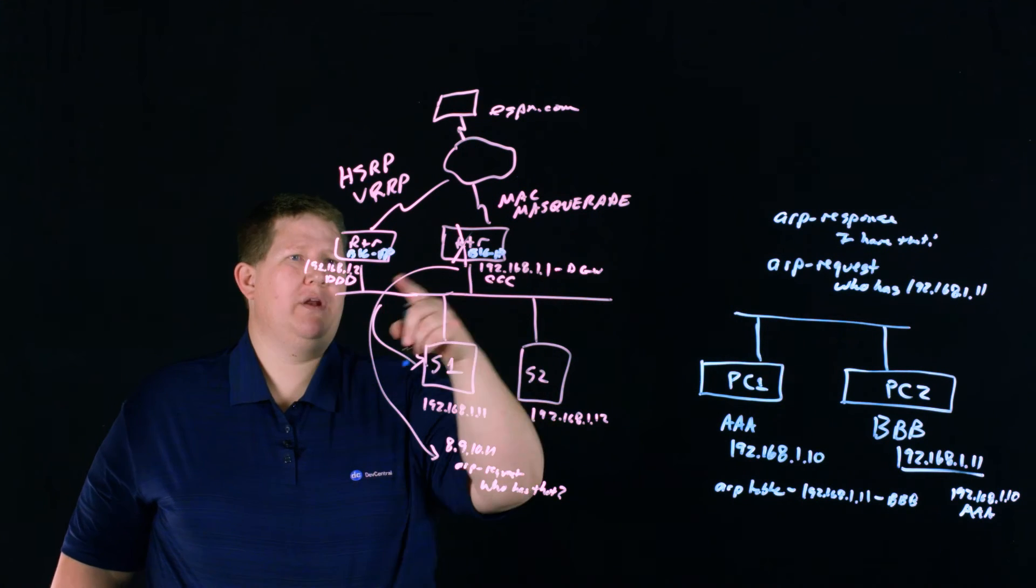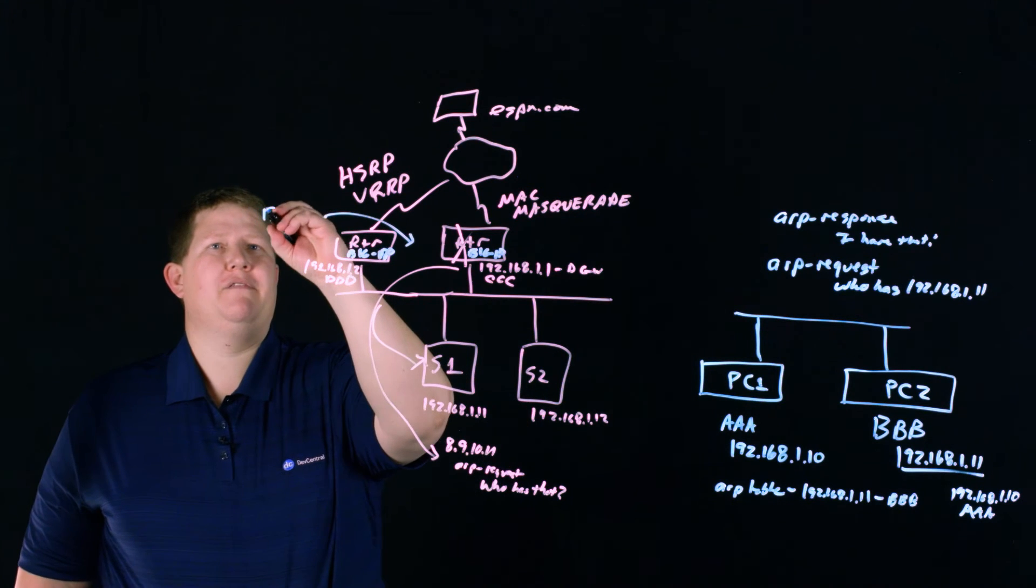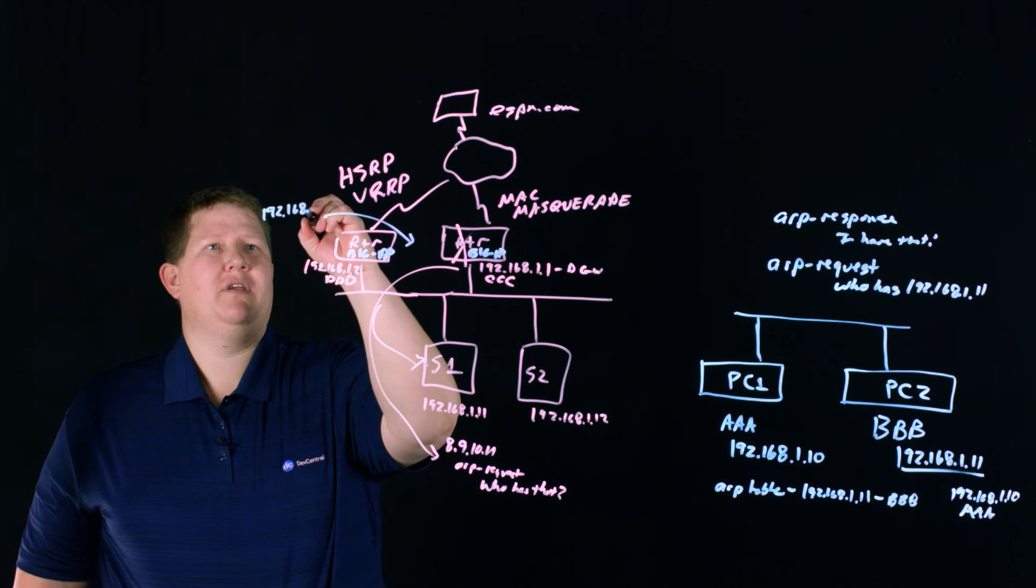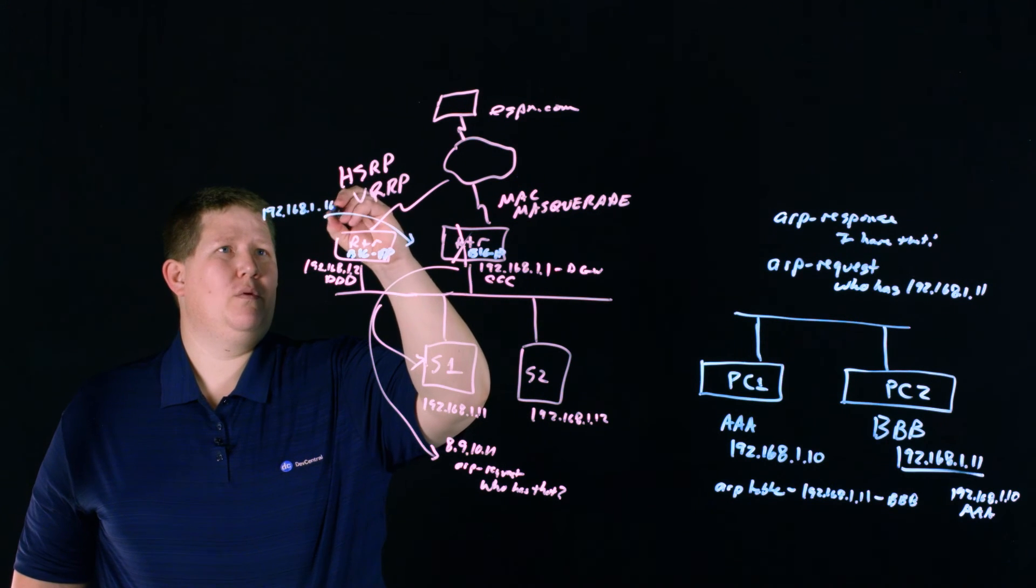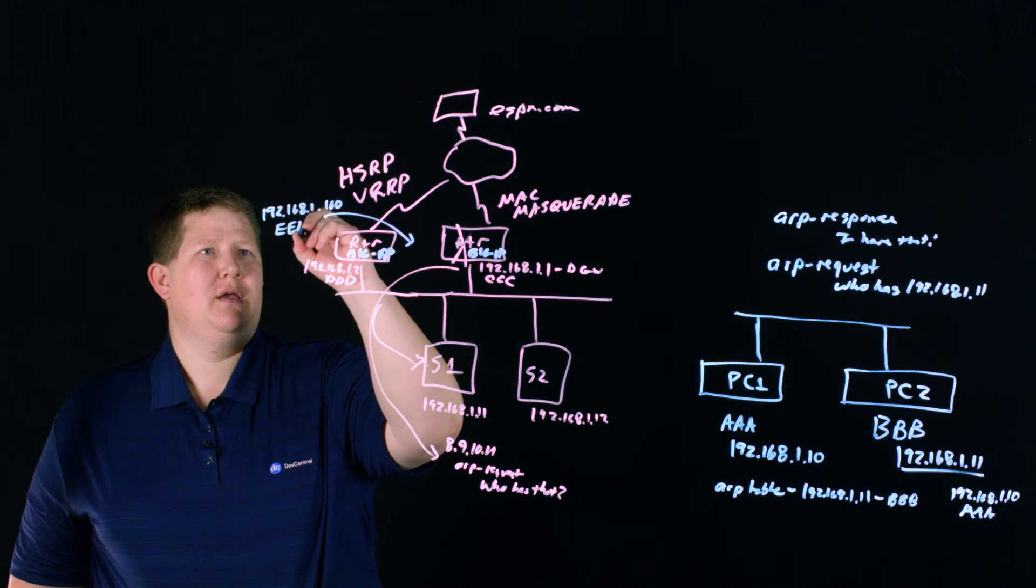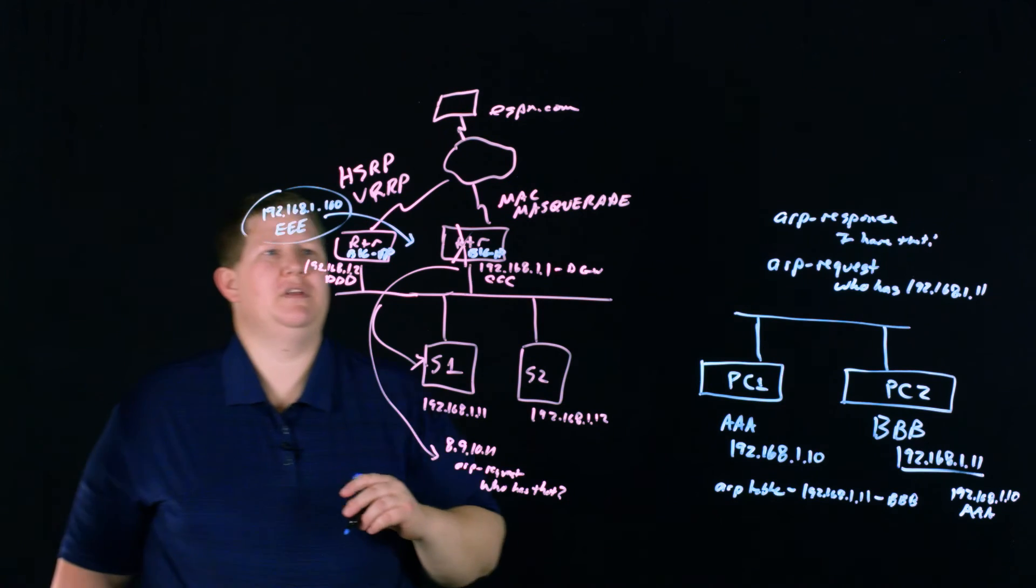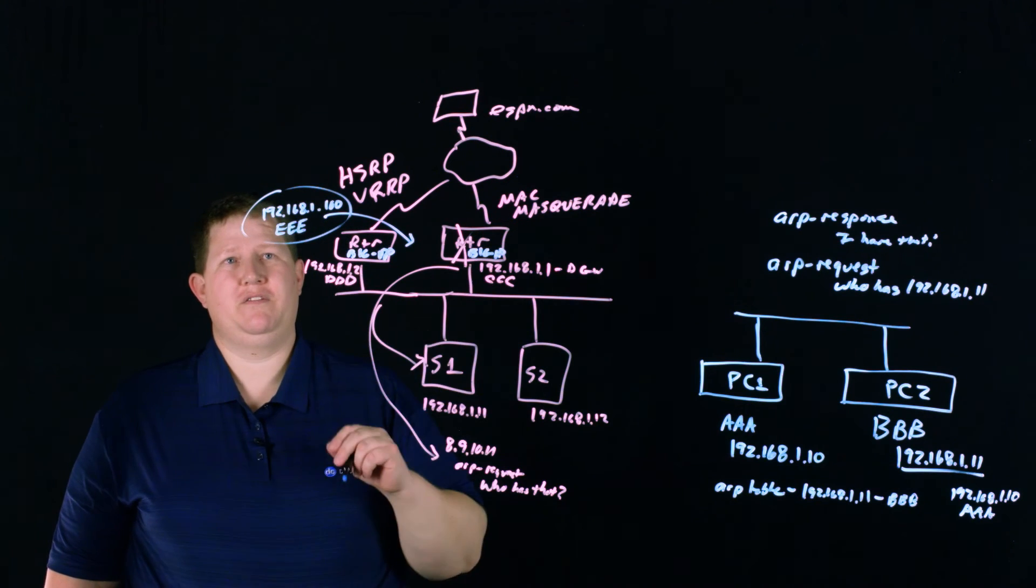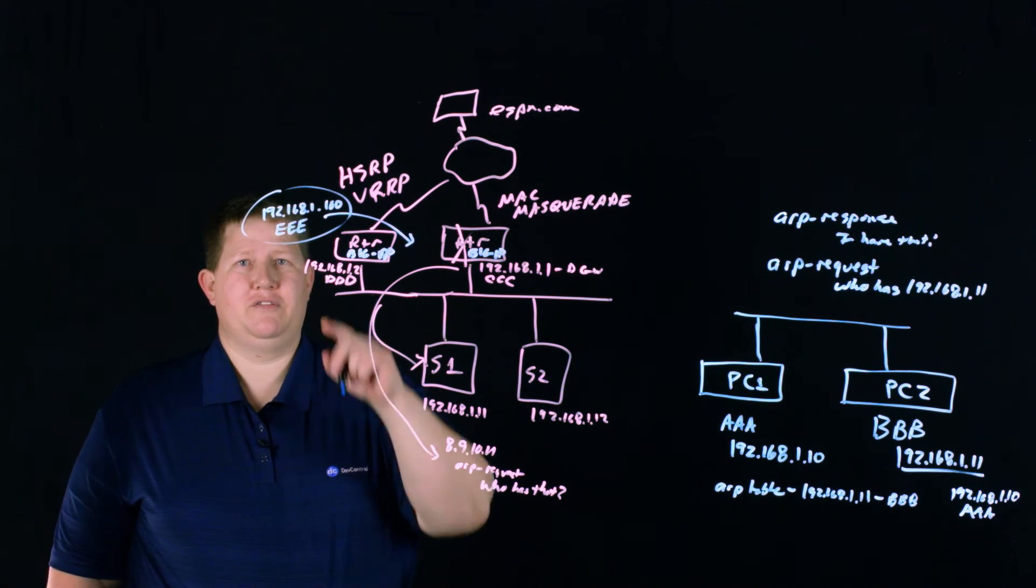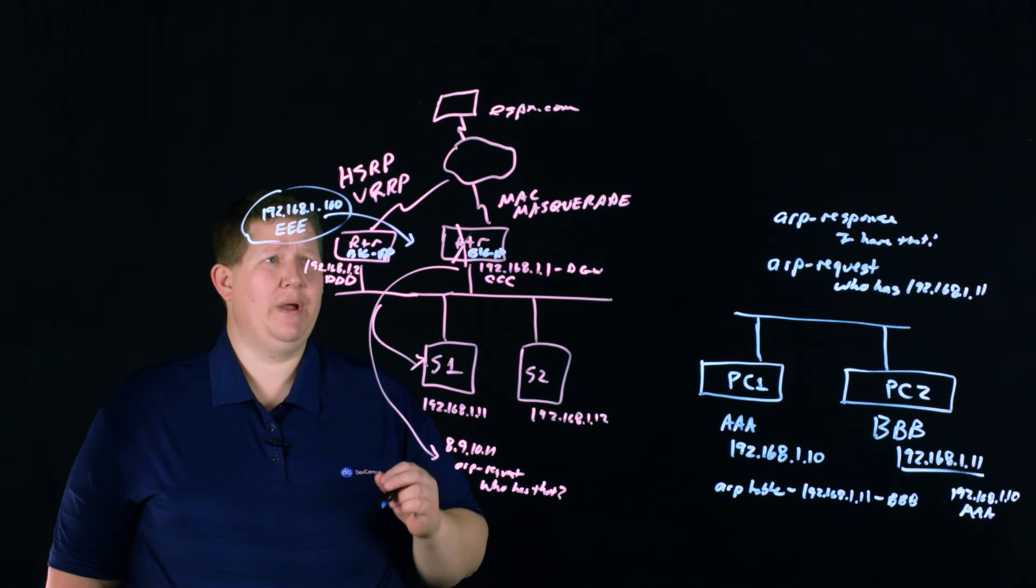And then I configure MAC Masquerade. I'm going to have, say, 1.1 and 1.2, but I'll say right here in the middle, I'm going to have 192.168.1.100, and that MAC is going to be shared, and that's EE. So this is a virtual, it's a shared IP alias between these two, and it's a shared MAC address that's unique on the network that we have created.